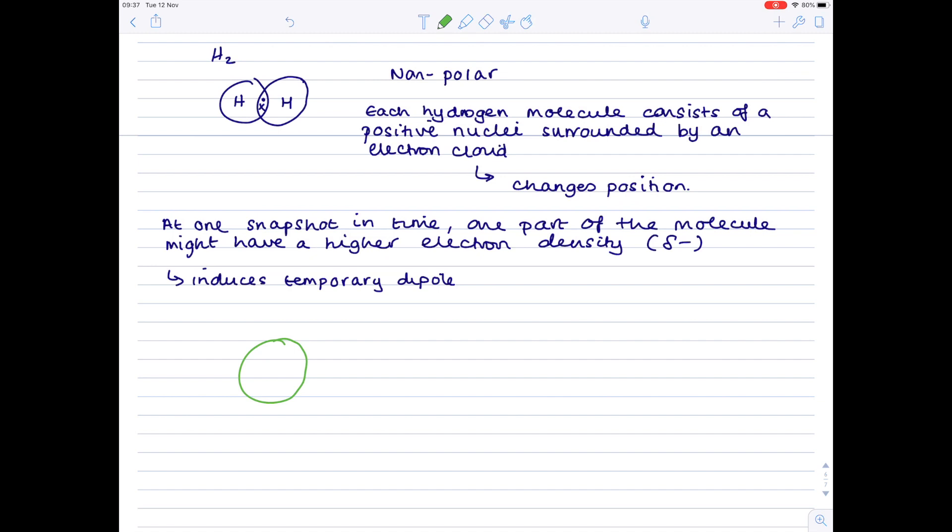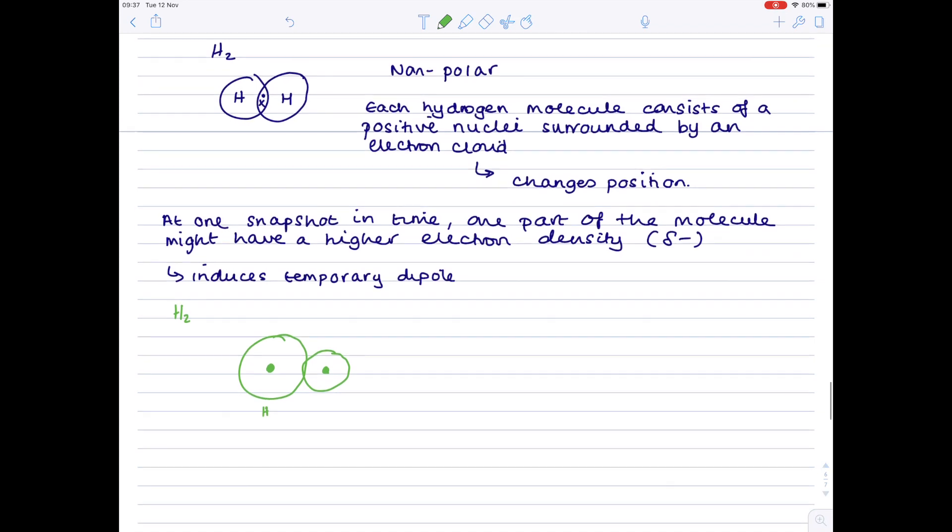So let's try and show this with a pictorial representation. Here's the nucleus of each of the hydrogen atoms which make up that hydrogen molecule. Because the left-hand atom has become electron-rich, you can see it's a bit bigger, it has a delta-negative charge. The right-hand atom has become slightly electron-deficient, so it has a delta-positive charge.